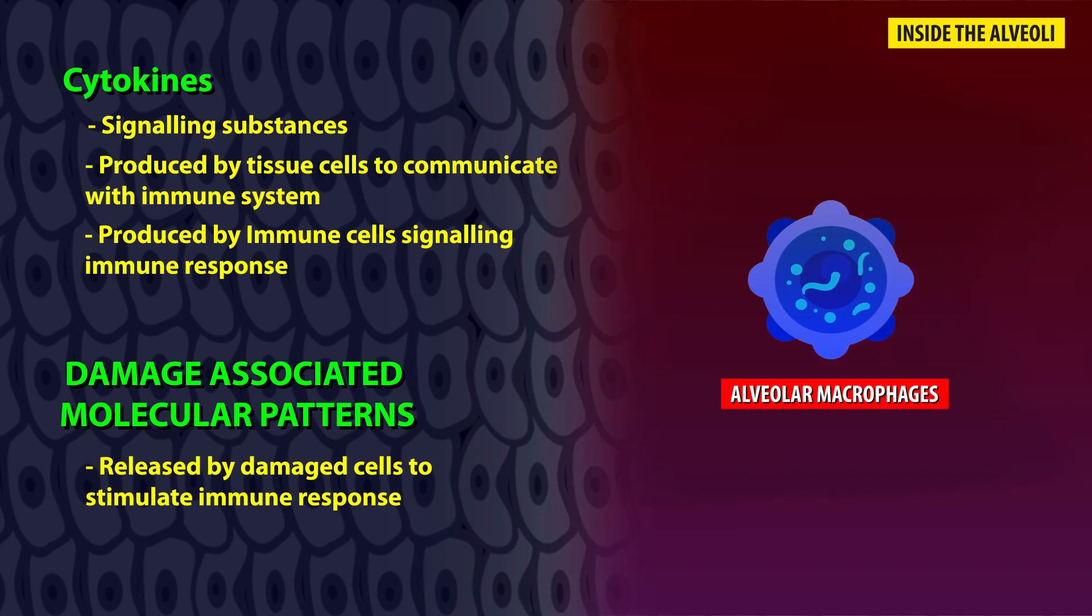Then, macrophages, one of the most specialized cells in the immune system, gets activated. The macrophages then begin to secrete inflammatory cytokines, which results in the acute inflammation inside the lung.